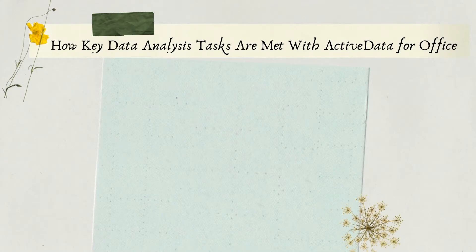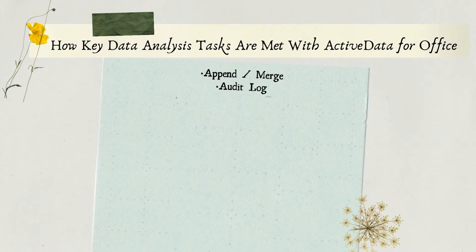Active Data for Office key data analysis tasks: Active Data can combine two files that have the same field into a single file. An example is merging two years' worth of accounts payable history into one file. Active Data keeps track of all procedures performed on the data file in the documentation log.